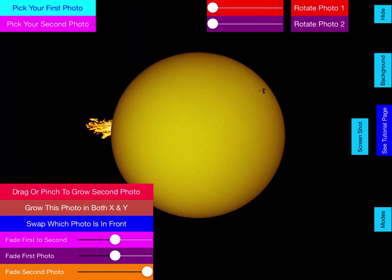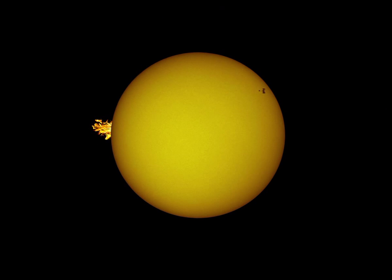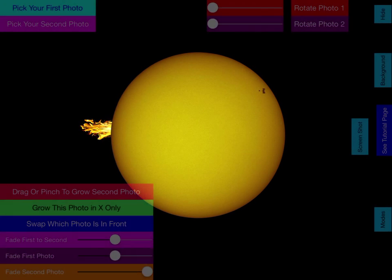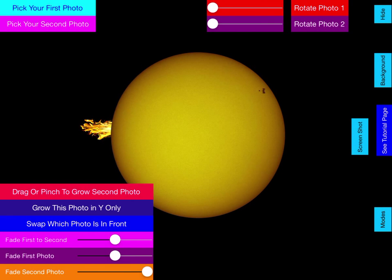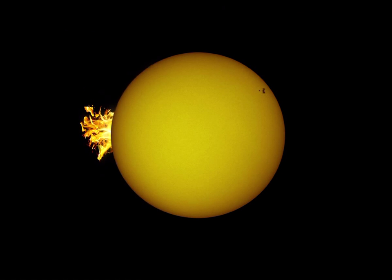And then if you want you can scale the solar flare in X and Y, you can grow it in X only or Y only. You can change the effect that you get.